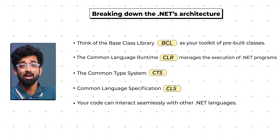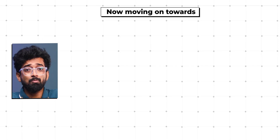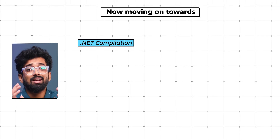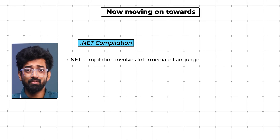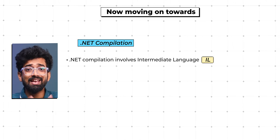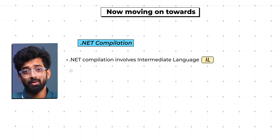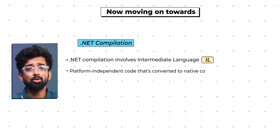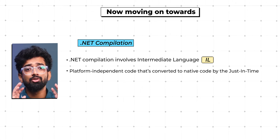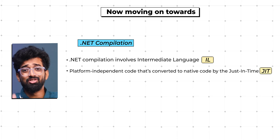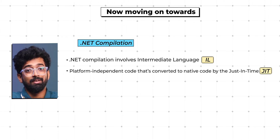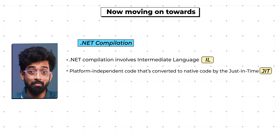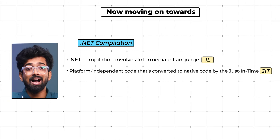Moving on to .NET compilation: it involves Intermediate Language (IL), also known as MSIL. This is platform-independent code that is converted to native code by the Just-In-Time (JIT) compiler, or RyuJIT. This magic happens at runtime, which makes your code efficient and adaptable.